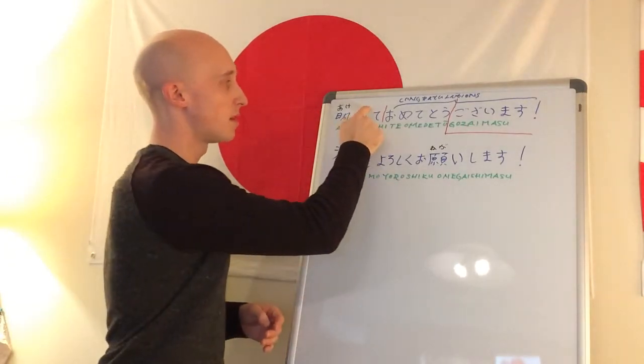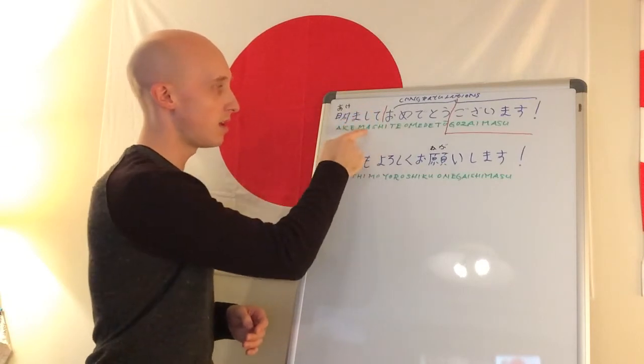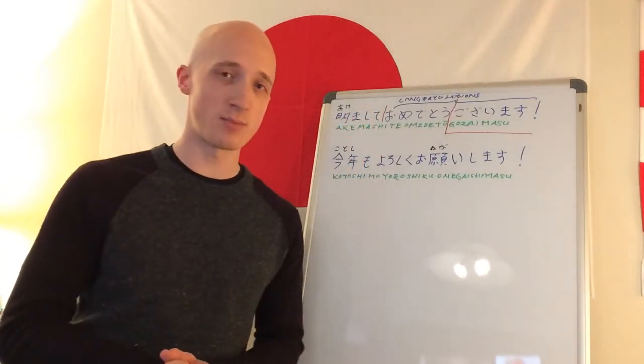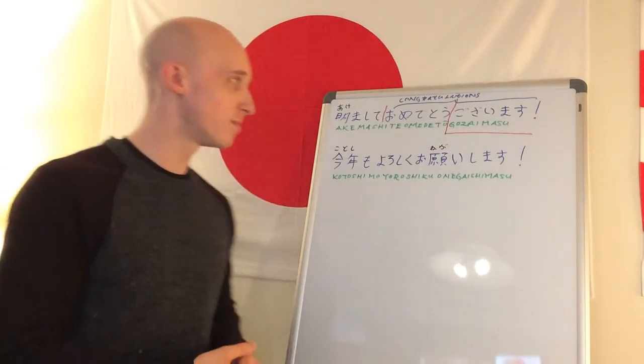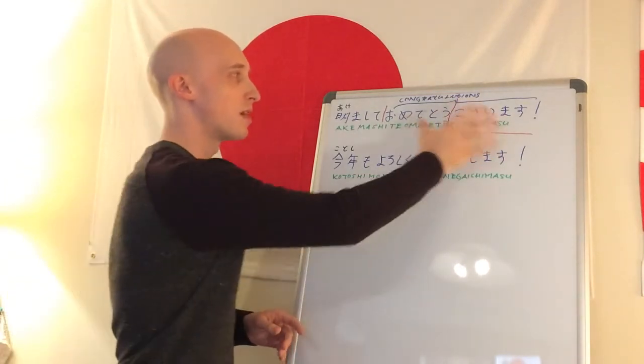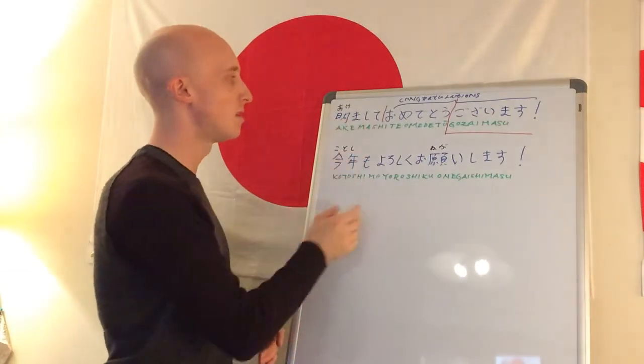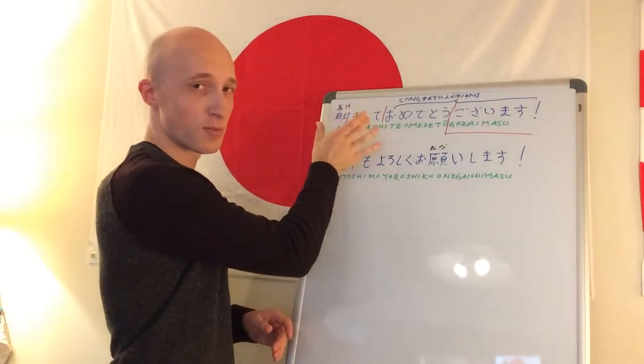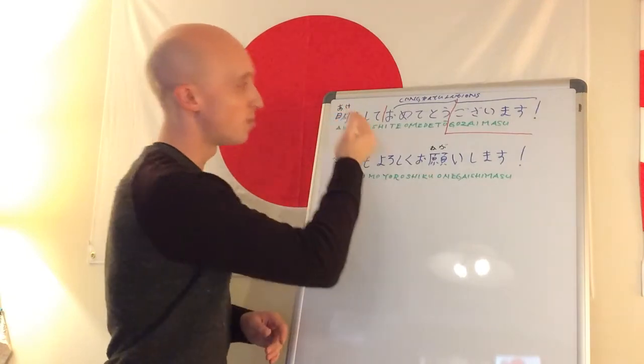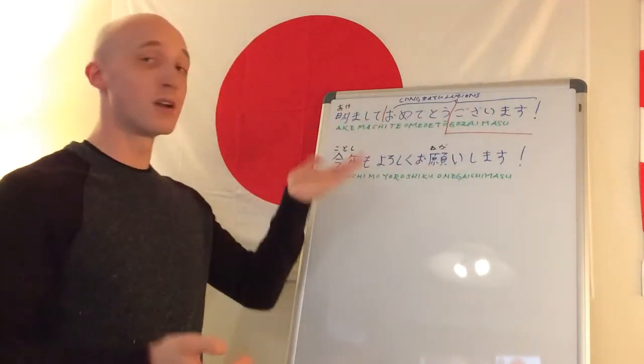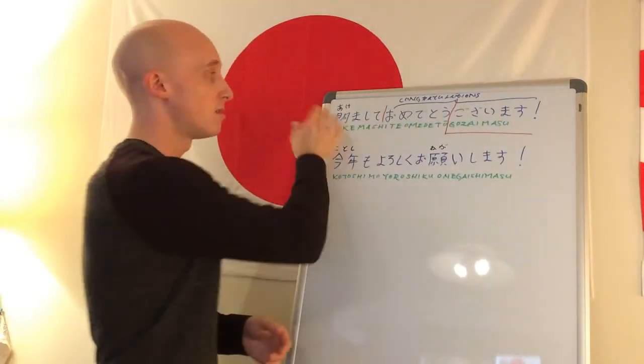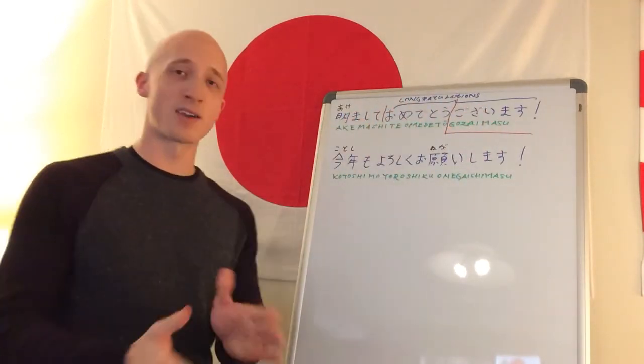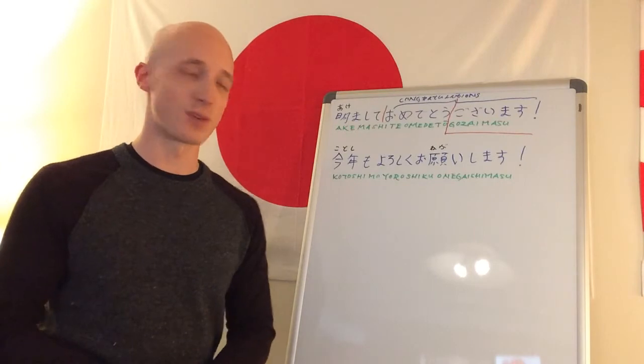Otherwise, Akemashite simply has to do with the idea of opening. And you'll notice also that we have it ending in this te here. If you haven't heard of it yet, there's something called the te form in Japanese, a very important verbal form. And if you want to say congratulations on something happening, you take the verbal form. So here's this verbal form of the idea of opening, and then we're putting congratulations. So on the opening of the new year, which we're not saying here, on the opening, congratulations. So that's what the first phrase means. Akemashite omedetou gozaimasu all together.